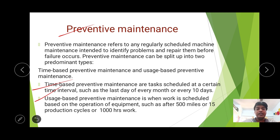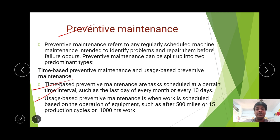Use-based preventive maintenance is not based on a period of time but on usage intervals. For example, like a bike — after running a certain mileage, say 500 km or 1000 km, you take it in for maintenance. Similarly, after a certain number of miles, 50 production cycles, or 1000 hours of work, maintenance is scheduled. This is called use-based preventive maintenance, and it applies to machinery and equipment in collieries or mines, whether open cast or underground.